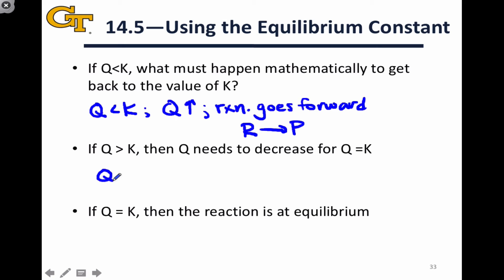If Q is greater than K, well then Q needs to decrease in order for Q to eventually equal K. So in that case, the reaction must go in reverse. Products are converted to reactants. Reactants show up in the denominator of the Q expression, decreasing the value of Q as products are consumed and reactants are generated, until the point when Q equals K. And at that point, when Q is equal to K, the reaction is at equilibrium and goes neither in the forward nor reverse direction spontaneously.